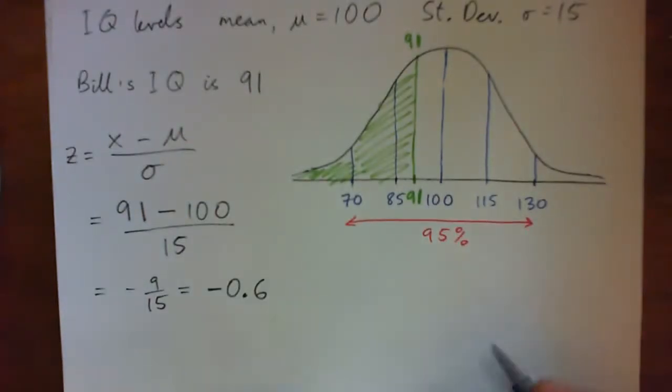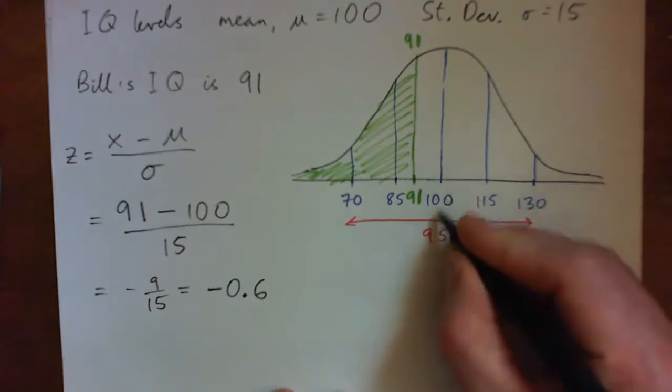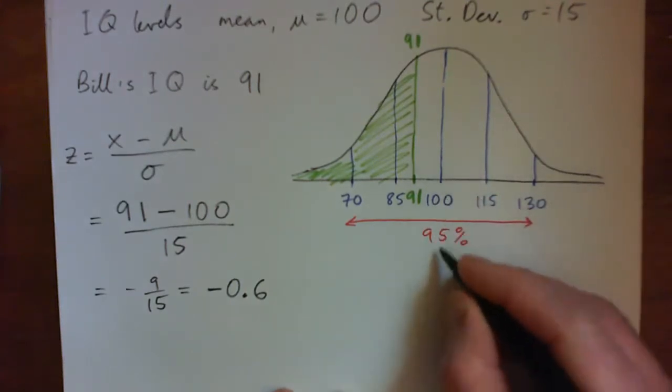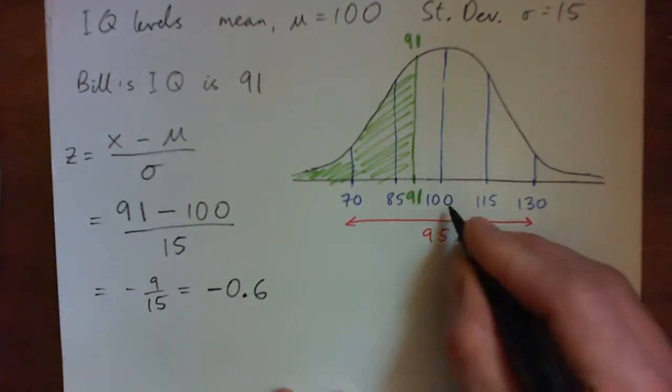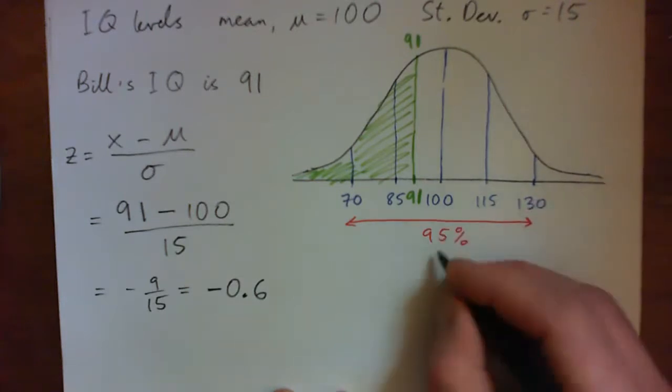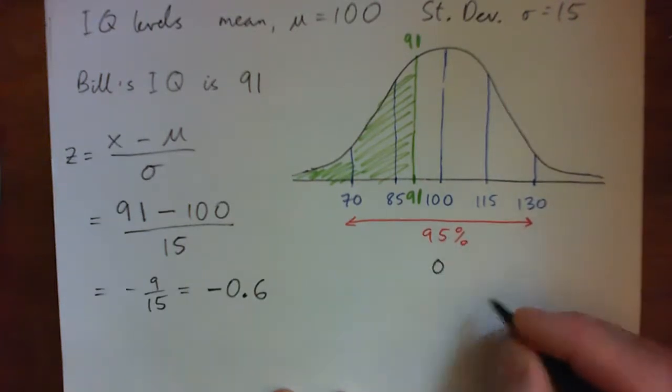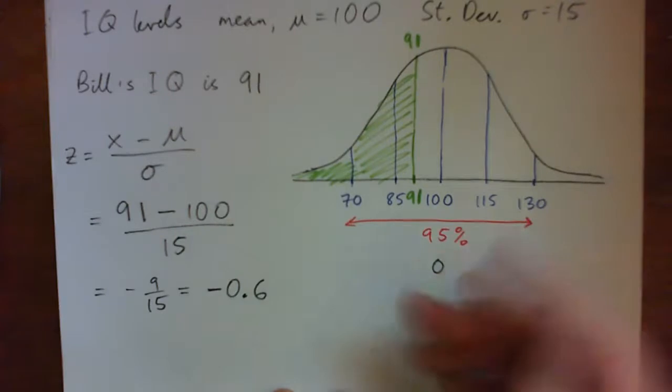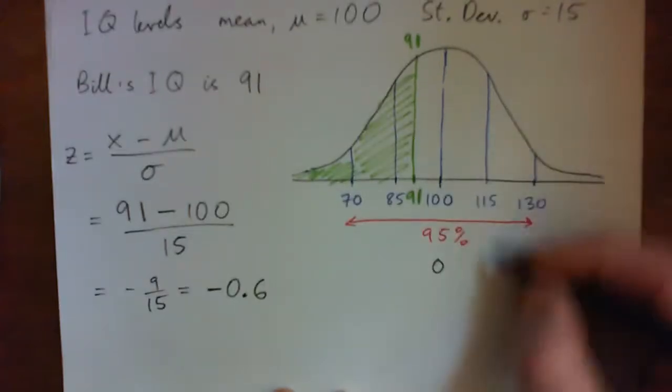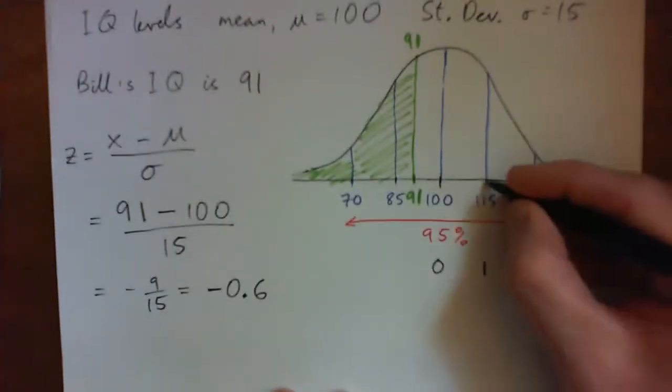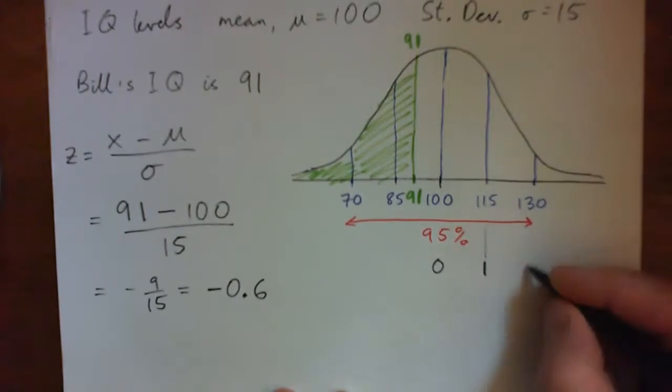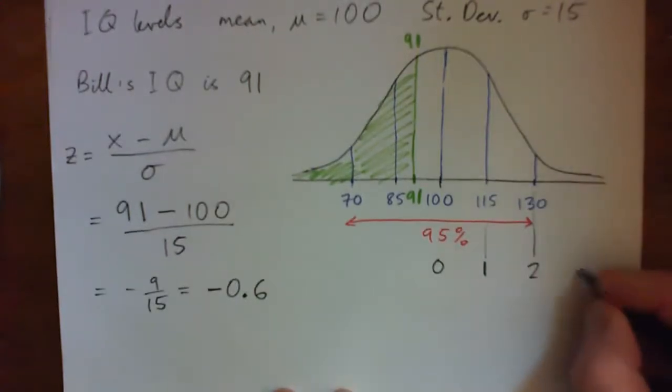So, and all that means is, if we think about, 100 is the mean, and 100 is right there. It's zero standard deviations. It is right there at the middle. 115 is one standard deviation above the mean. 130 is two standard deviations. So these are the Z scores.